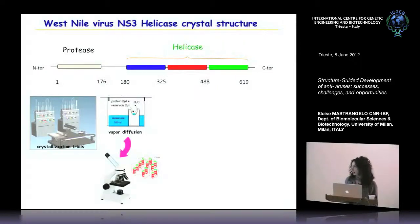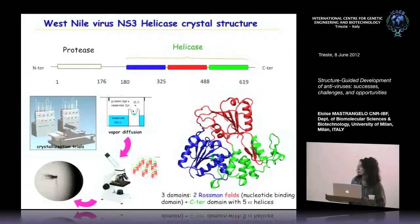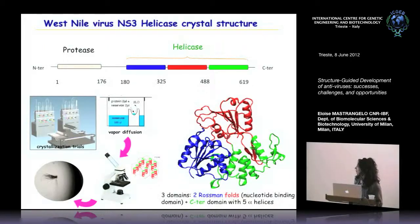We analyzed the drops using a microscope and, if we were lucky, we obtained thin crystals that allowed us to solve the structure of the West Nile helicase domain. This structure is composed of three domains — blue, red, and green. The first two domains are very similar in fold and show a Rossmann fold, with a beta sheet surrounded by four and three alpha helices. The third domain is mainly composed of alpha helices. The first two domains are the nucleotide binding domains, binding ATP, which provides the energy necessary for the helicase to unwind RNA.